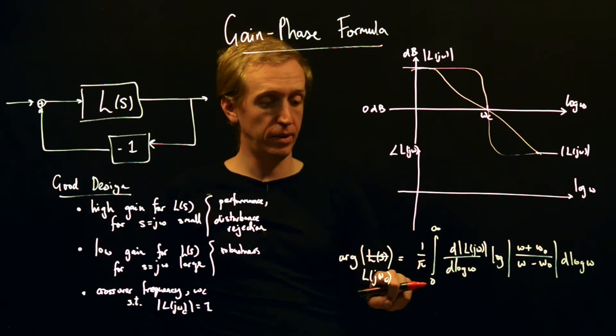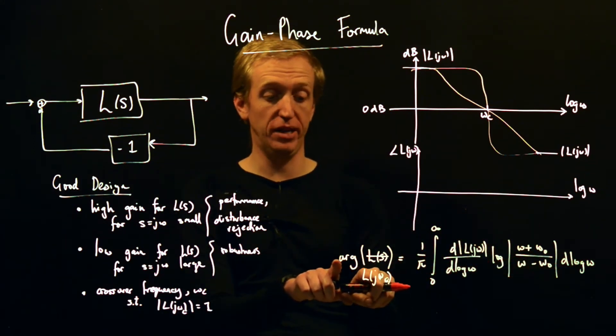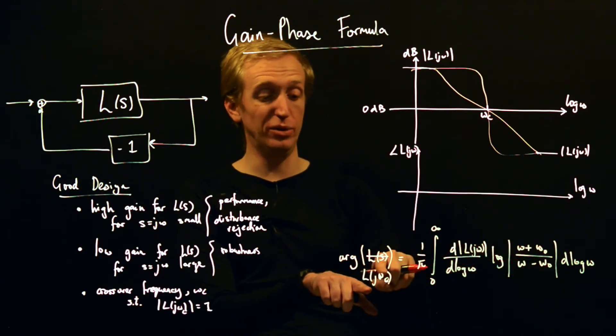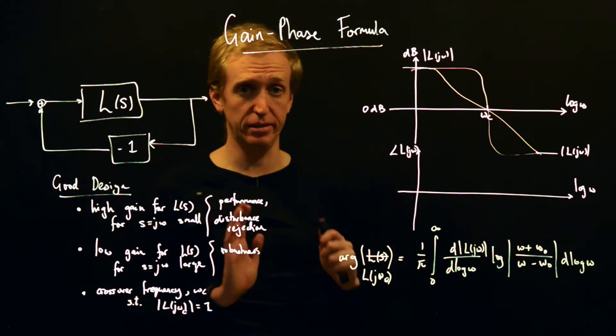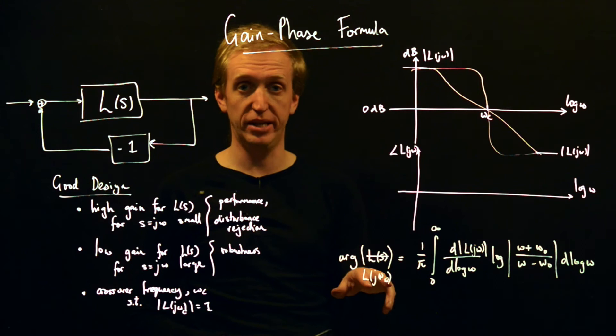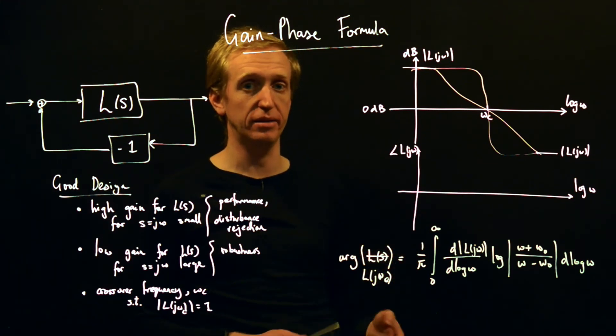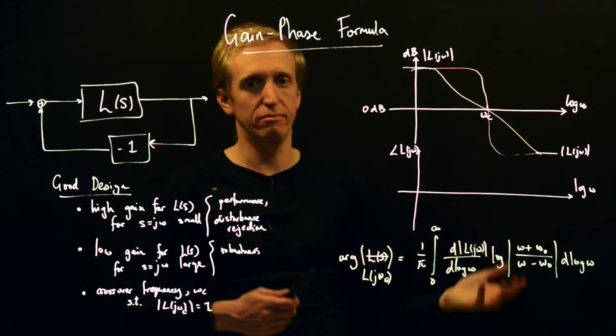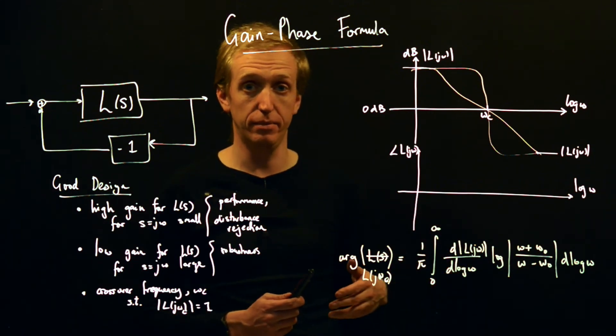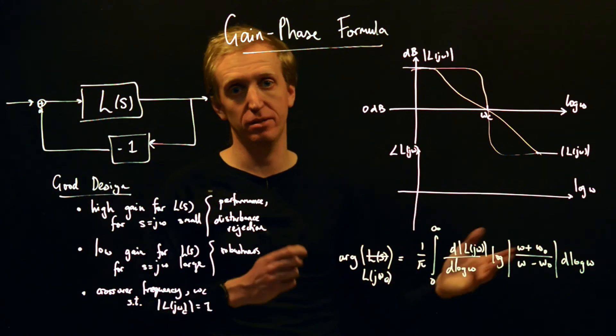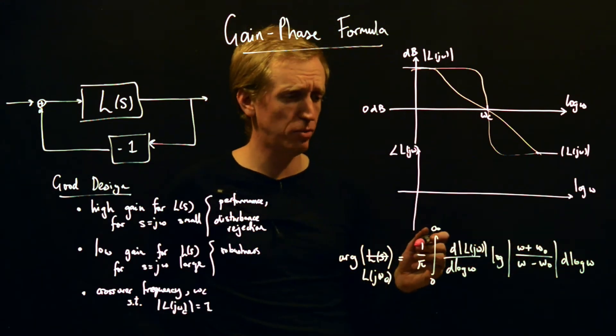This formula allows us to find the argument of L(jω) at some particular frequency ω_0 by performing an integral with respect to ω. We can do this for whatever frequency ω_0 we like. But interpreting what this formula means is interesting. First, there are some caveats. This formula only holds when L(s) is the ratio of two polynomials and when it has no poles in the right half-plane and no zeros in the right half-plane. It's a slightly restricted formula, but it can nevertheless provide insight into good control system design.